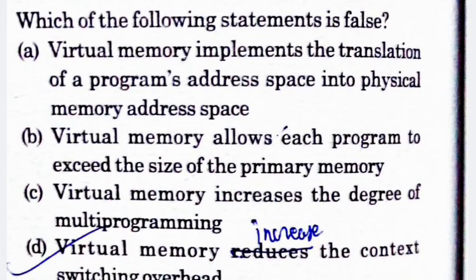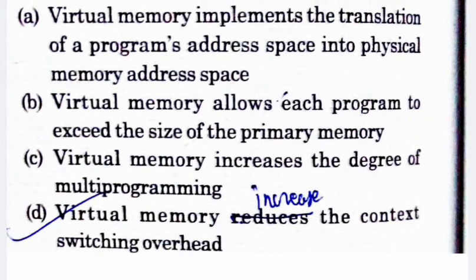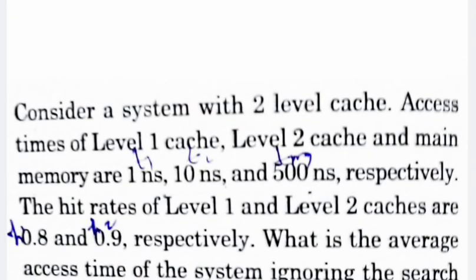Next question: which of the following statements is false? Statement A: virtual memory implements the translation of a program's address space into physical memory address space. Statement B: virtual memory allows each program to exceed the size of primary memory. Statement C: virtual memory increases the degree of multiprogramming. Statement D: virtual memory reduces the context switching overhead. Option D is the false statement — virtual memory does not reduce context switching overhead; it actually increases it.